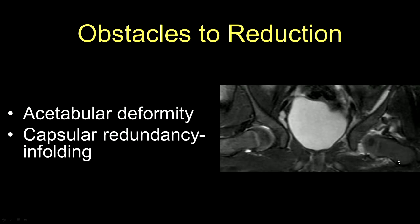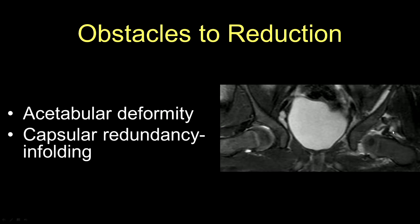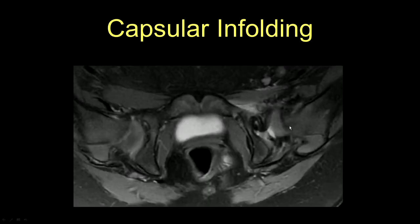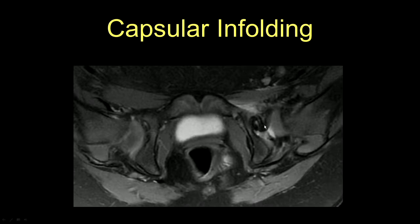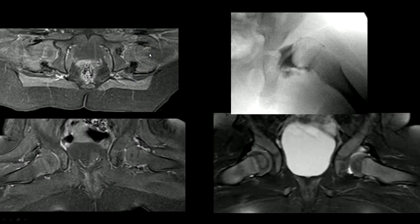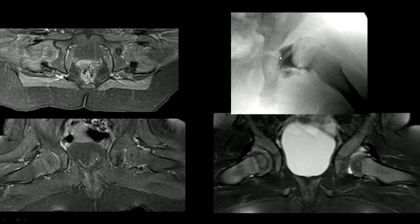Another obstacle to reduction is acetabular deformity. You can see the so-called limbus, a ridge in the acetabulum, and sometimes the femoral head can be outside. Looking at the capsule, you can see it being redundant — the capsule sometimes can form an enfolding that gets in the way of reduction. Another case of an enfolded capsule: the femoral head, the redundant capsule getting in the way and interfering with the femoral head coming into the acetabulum. There is also a pulvinar, a little ridge in the acetabulum — the limbus — and a prominent ligamentum teres on arthrogram, all interfering with reduction.